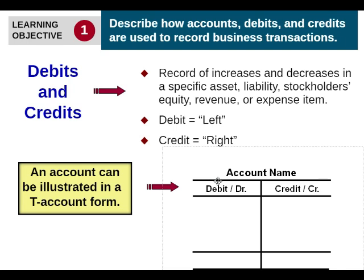A T-account is just a simplified version of a ledger. You have the account name and then a debit column and a credit column. So if this was cash, for example, and we're saying we are debiting cash, then we will put that on the left side. We'll have a debit balance or a credit balance depending on whether we withdrew too much money or didn't. This is a T-account — just simple, basic stuff that you see in beginning accounting textbooks.